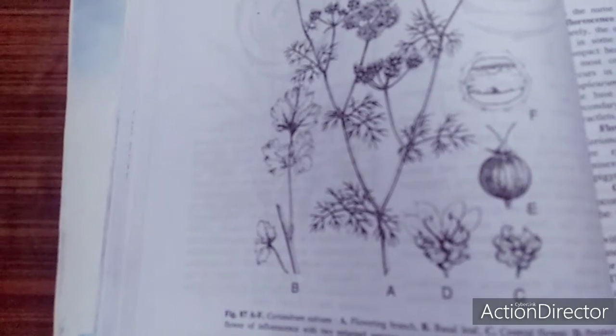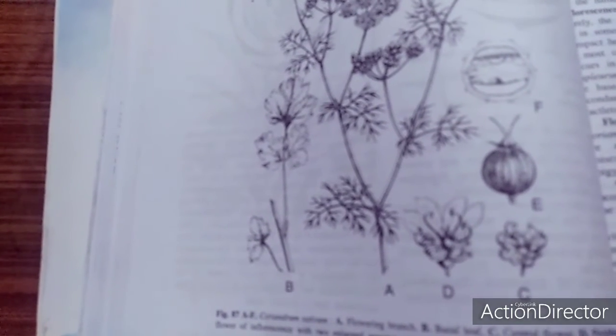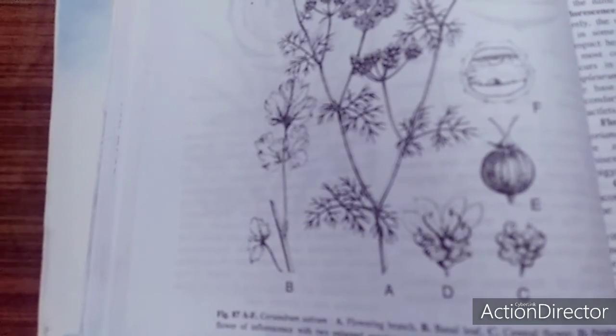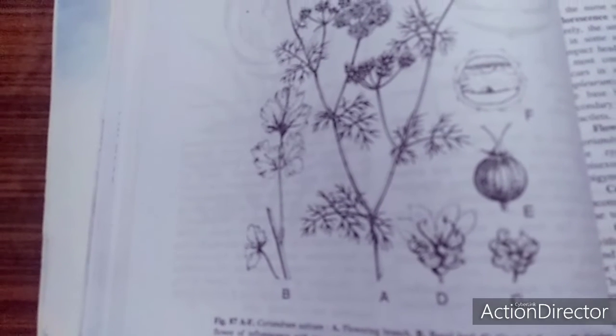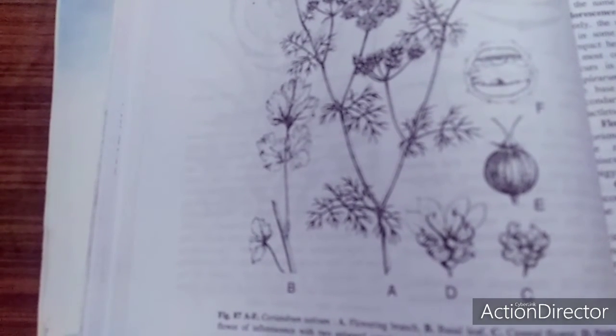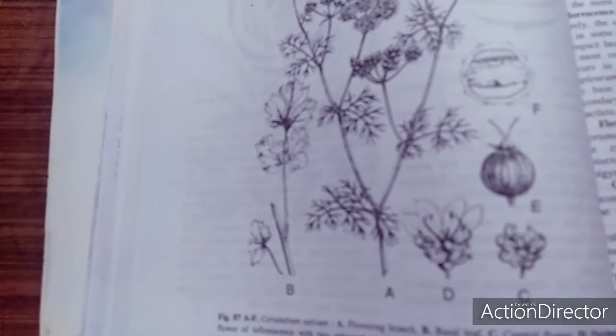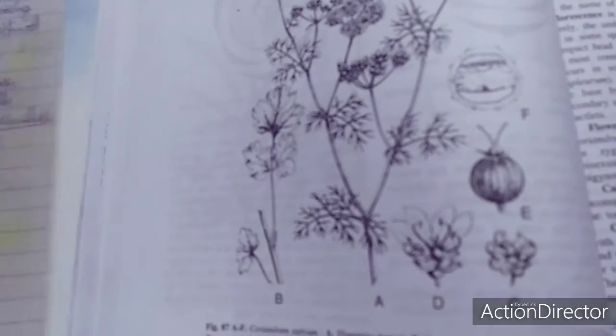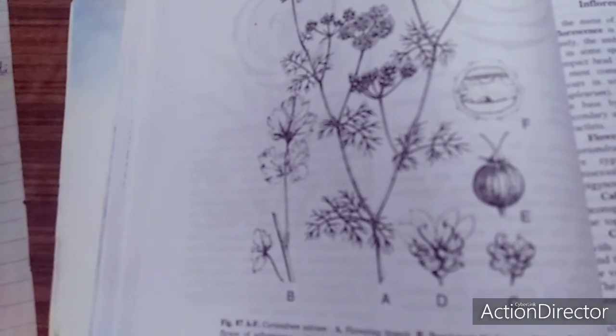These mericarps remain attached to the prolonged end, which is called the carpophore of the axis. Again repeating: the dry indehiscent two-chambered fruit develops from inferior bicarpellary ovary, and when ripe splits into two indehiscent one-seeded mericarps which remain attached to the prolonged carpophore of the axis.